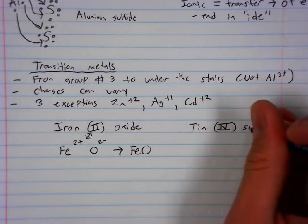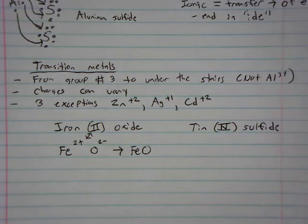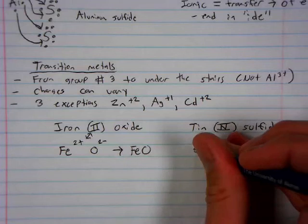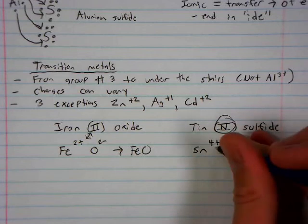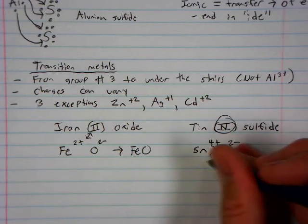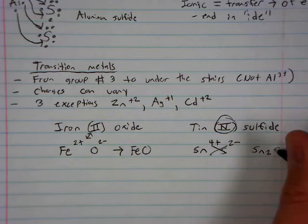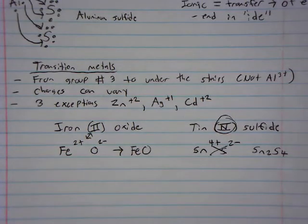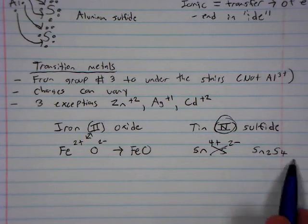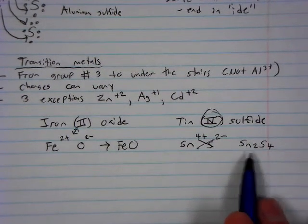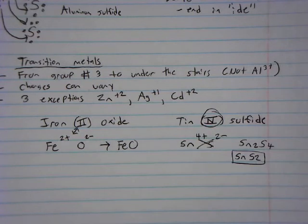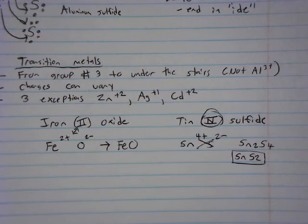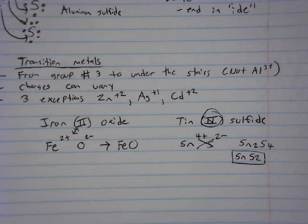What about tin four sulfide? I was going to write a formula for that. I know that tin, S-N, is a four plus. Sulfur is a two minus. I'm going to crisscross. That gives me S-N two, S-four. And now that we have larger subscripts, larger charges, you have to reduce. So this would not give you the point. You have to rewrite that as S-N, S-two. That would be your formula for tin four sulfide. We never show ones, because ones are assumed just like in math.